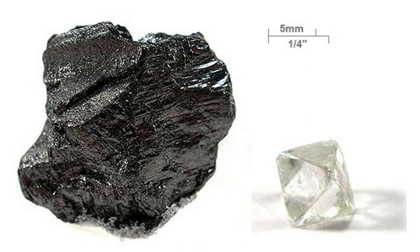Carbon is the fourth most abundant chemical element in the observable universe by mass after hydrogen, helium, and oxygen. Carbon is abundant in the Sun, stars, comets, and in the atmospheres of most planets. Some meteorites contain microscopic diamonds that were formed when the solar system was still a protoplanetary disk. Microscopic diamonds may also be formed by the intense pressure and high temperature at the sites of meteorite impacts.